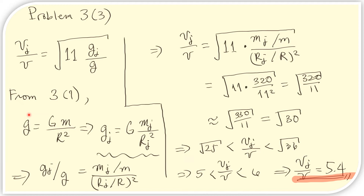From problem 3.1, this is how we computed the acceleration due to gravity on Earth; on Jupiter it follows the same form. Getting this ratio, the numerator contains the mass ratio which is 320 and the denominator contains the radius ratio which is 11. The 11 in the denominator cancels with one of the 11s, leaving us needing the square root of 320 over 11. Approximating 320 as 330 — which is divisible by 11 — we need the square root of 30, which falls between 5 and 6. The answer among the choices is 5.4.